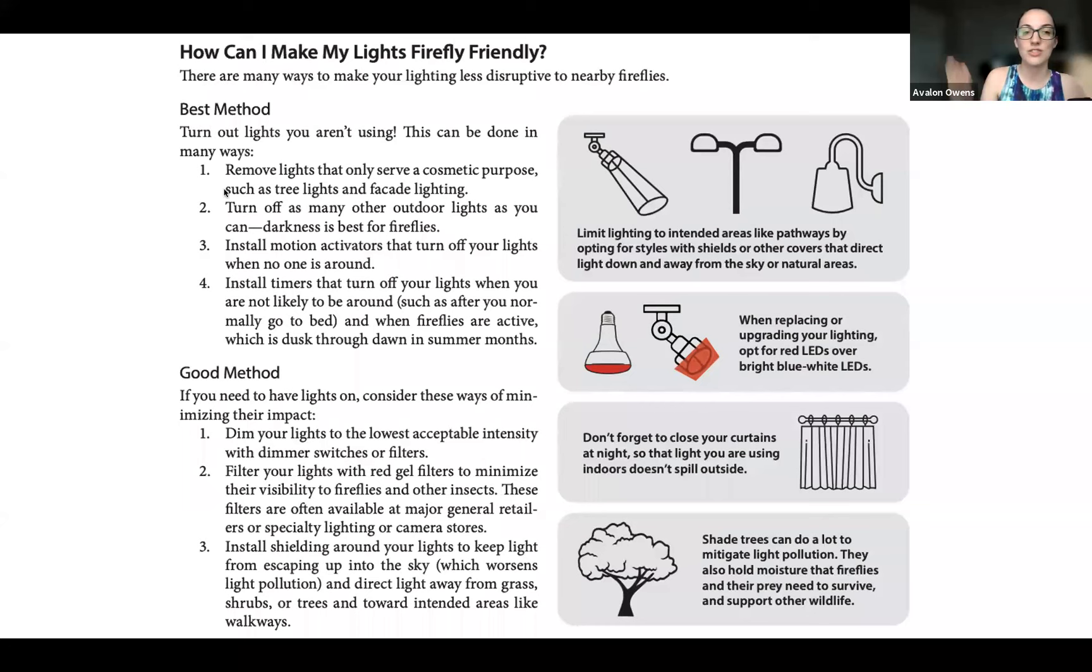Our basic recommendations, we try to really highlight that, number one, just remove lights that aren't doing anything. Aesthetics are very nice. And if you're not near a natural area, sure, I'm not going to complain about it, but if you're near firefly habitat, or you want to protect nearby natural spaces, you don't need to light up your trees. You just don't. And then other lights, turn them off when you're not using them. Ideally you would install motion activators that turn them off for you. Timers can also do that. Turn your lights on and off when you're not around or not going to be using them.